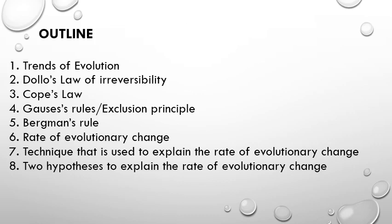Number 1 is Trends of Evolution. Number 2 is Dollo's Law of Irreversibility. Number 3 is Cope's Law. Number 4 is Gause's Rules or Exclusion Principle. Number 5 is Bergmann's Rule. Number 6 is Rate of Evolutionary Change. Number 7 is Technique that is used to explain the rate of evolutionary change. And the last one is the two hypotheses to explain the rate of evolutionary change.